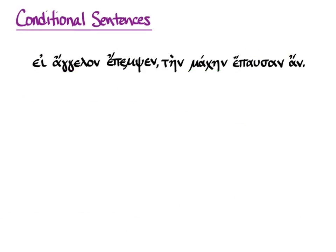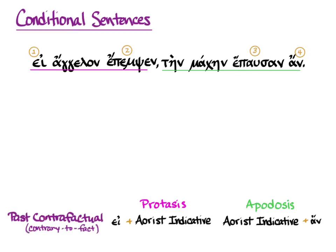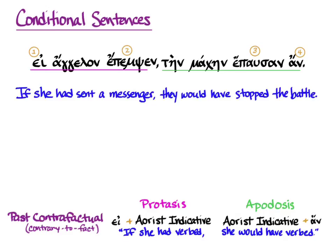One more. εἰ ἄγγελον ἔπεμψεν, τὴν μάχην ἔπαυσαν ἄν. We see our two clauses and check the 'if' — this time it's εἰ. We have ἔπεμψεν, which is aorist indicative. And then in the apodosis, we have ἔπαυσαν, which is also aorist indicative. And we do have an ἄν. That makes it Past Contrary to Fact: 'if she had verbed, she would have verbed.' So our translation is: 'if she had sent a messenger, they would have stopped the battle.' But we know what that sentence means — she didn't, so they didn't.